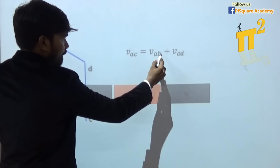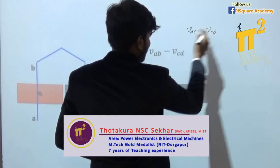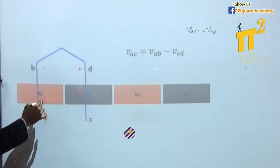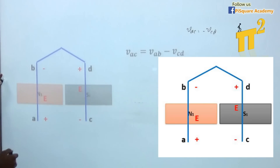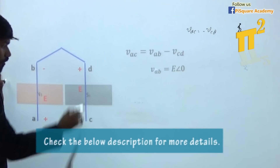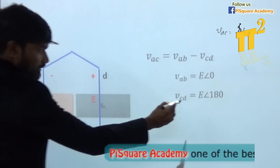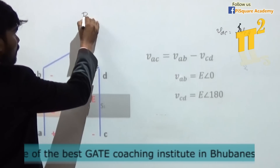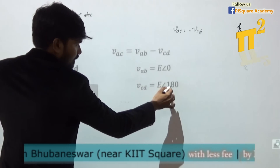I can rewrite this as VAB minus VCD — both are same, because VDC equals minus VCD. The voltage induced under the North Pole, let's take it as E. Under the South Pole it will be opposite. So if VAB equals E at angle 0 degrees as reference, then VCD is E at angle 180 degrees. Why 180 degrees? Because coil span equals pole pitch, and pole pitch equals 180 degrees electrical angle.